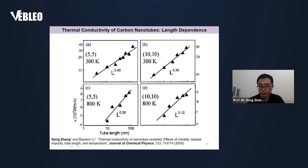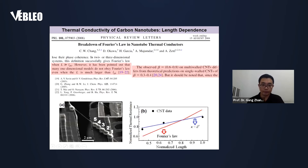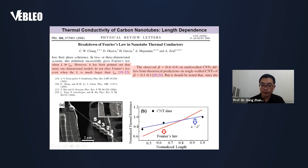We published the paper in 2005, and after about three years, our simulation result was verified by the UC Berkeley experimental group — the Majumdar and Zettl group. They did an experiment to measure the thermal conductivity of carbon nanotubes, and the experimental results fit very well with our simulation results. The experimental data confirmed that Fourier's law breaks down in 1D systems. So this is the conclusion.